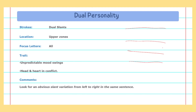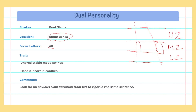To understand slant measurement, there are three zones: the upper zone, the middle zone, and the lower zone. To measure slant, you look at the upper zone letters — for example, the letter 'h'. If the stroke goes straight, it is vertical. If the letter leans leftward, the slant goes to the left. You check all letters, not just one particular letter, to assess dual personality through slant.